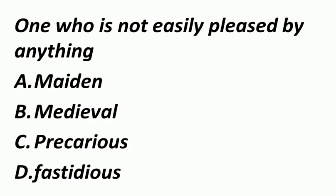One who is not easily pleased by anything — मतलब ऐसा व्यक्ति जिसको आसानी से नहीं मनाया जा सकता, नखरेवाज आदमी. ऐसे व्यक्ति को हम कहते हैं Fastidious. Maiden मतलब प्रथम जो होता है. Medieval means middle ages में. Precarious का मतलब है अनिश्चित — जिसका कोई ठिकाना नहीं होता.